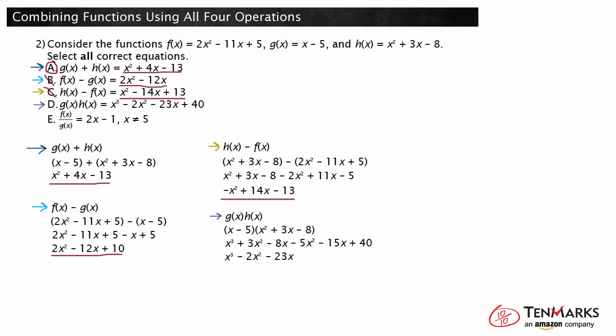And 40 cannot be combined with any other term. So, g of x times h of x is x cubed minus 2x squared minus 23x plus 40. This matches what is given in the answer choice.